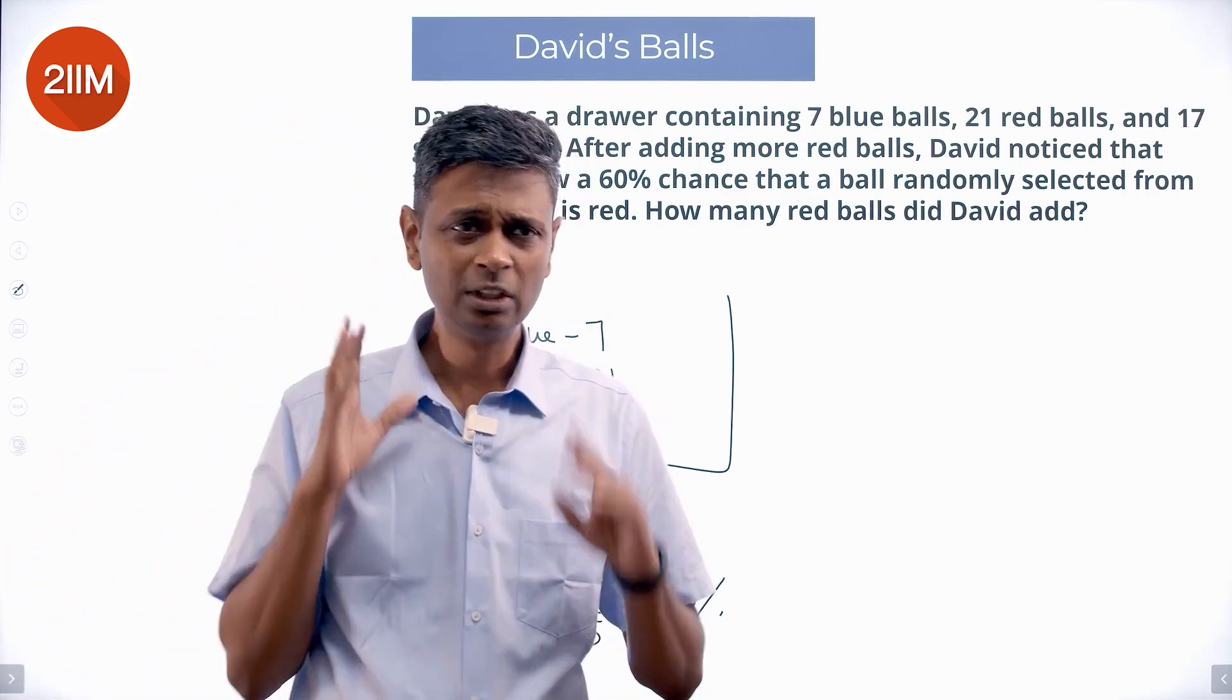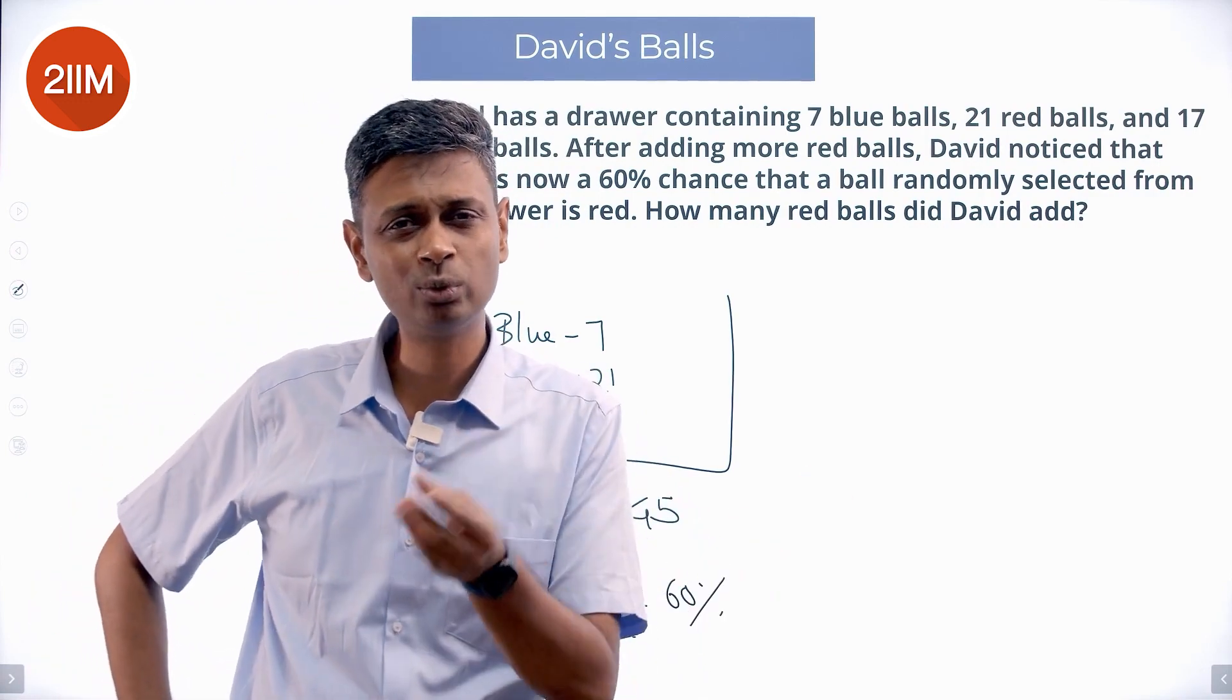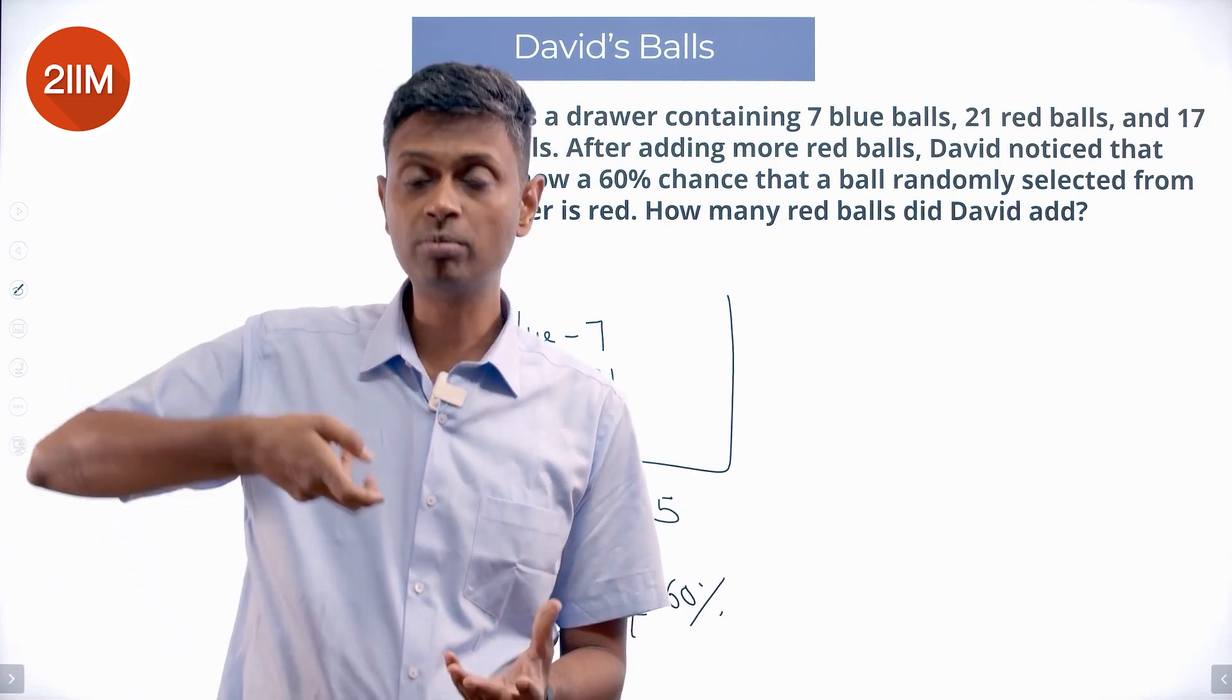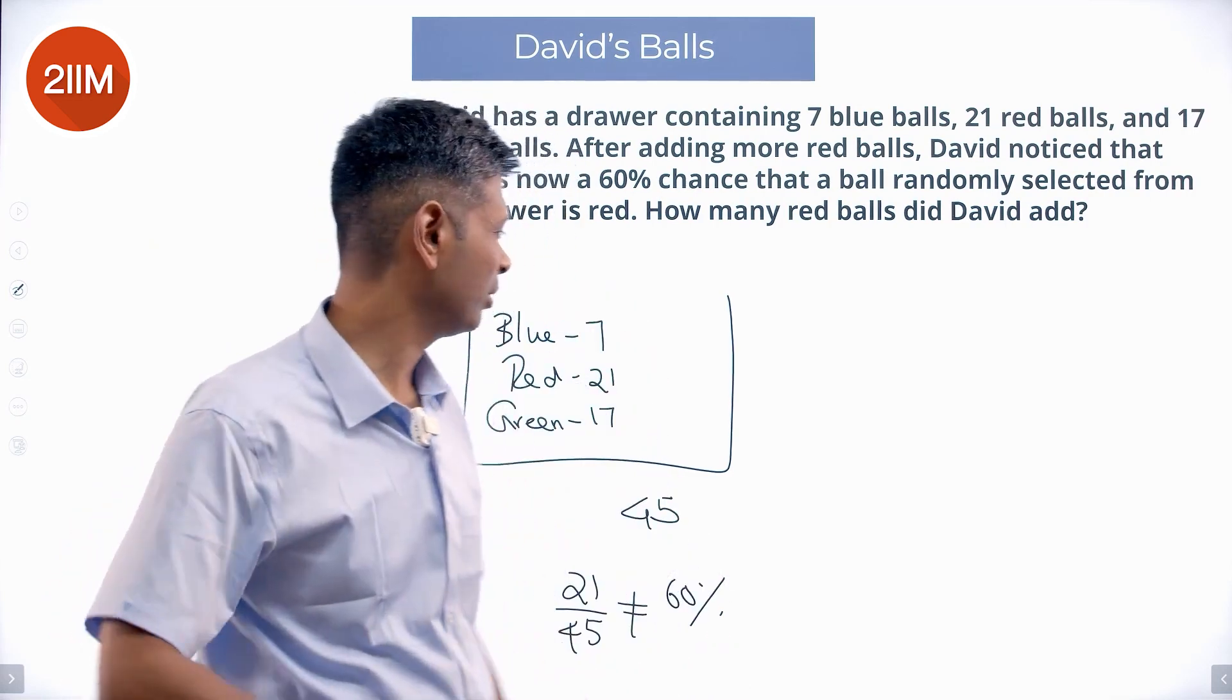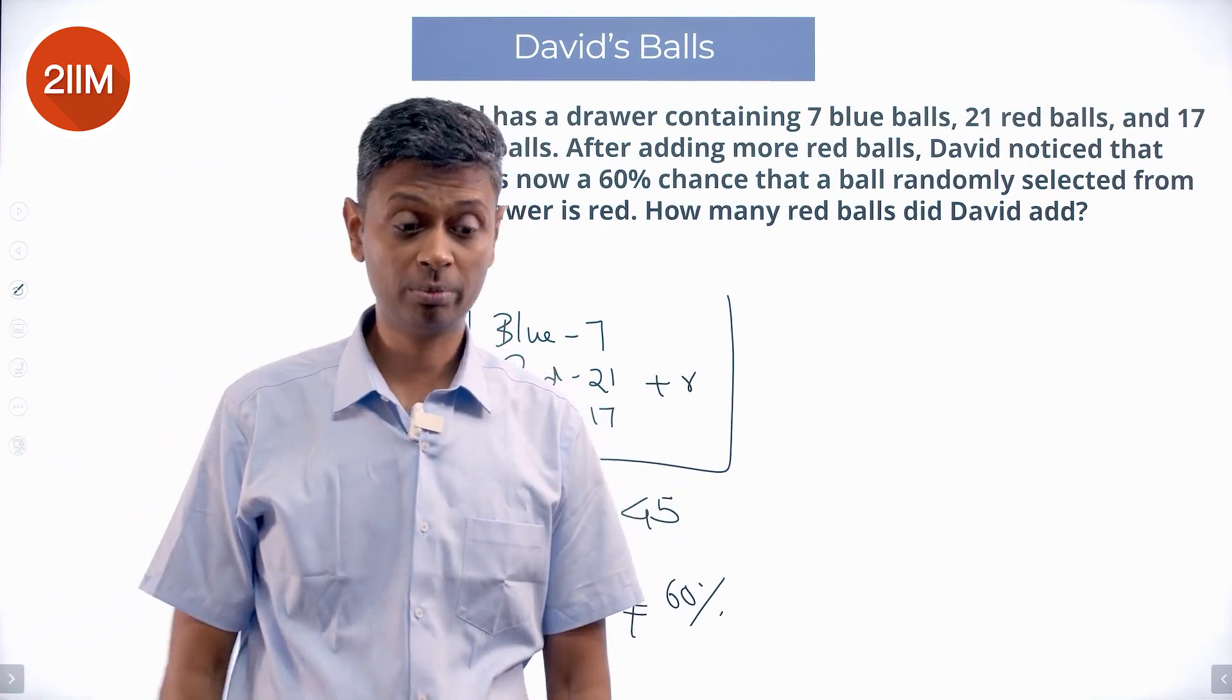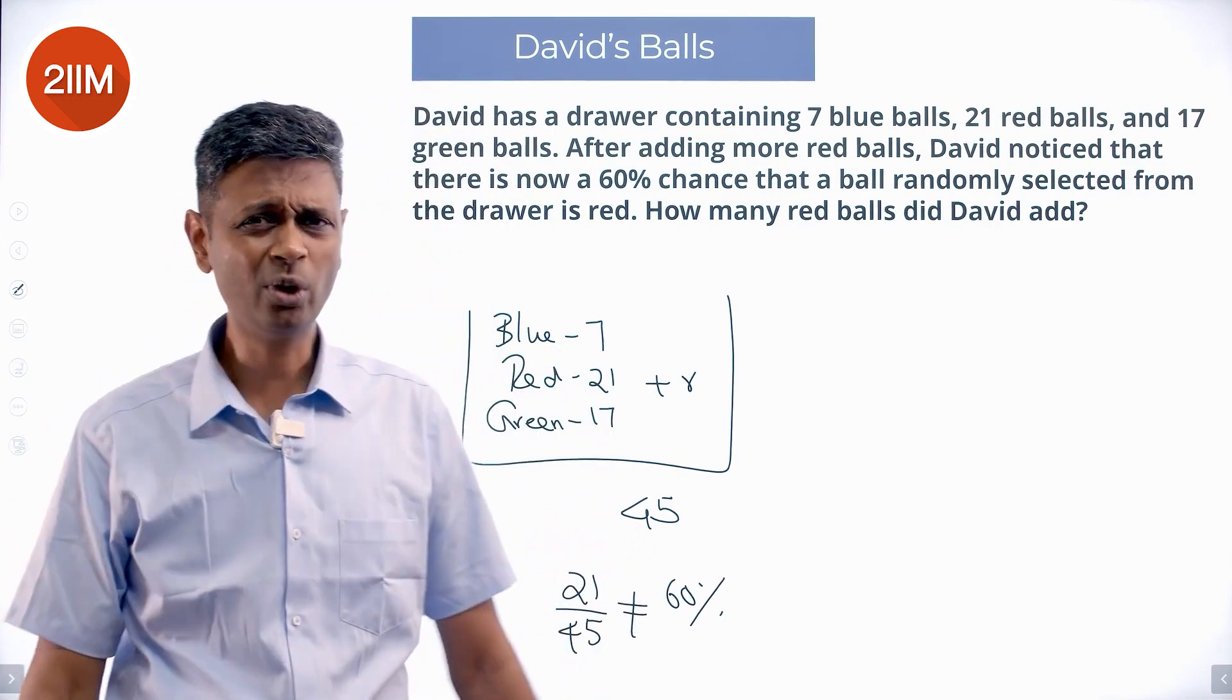So right now, this box does not have 60% red balls. I have to add a few red balls to slowly increase the share of red balls. I need to add red balls to take the share of red balls to 60%. That is what I want to do. How many am I adding? Maybe I am adding R of them. I add R red balls to make sure that my share of red balls increases to 60. Right now it is not 60, I want it to be 60.